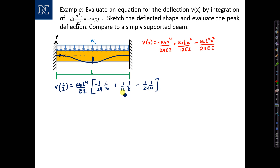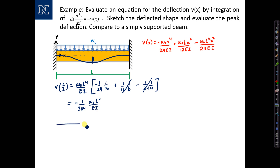The second term is 1/(12×8) and the third term is negative 1/(24×4) — those are equal and cancel out. We're left with negative 1/(24×16) = 1/384, giving a peak deflection of W-naught·L⁴/(384EI). The deflected shape looks like this, and the peak value in the center is W-naught·L⁴/(384EI).